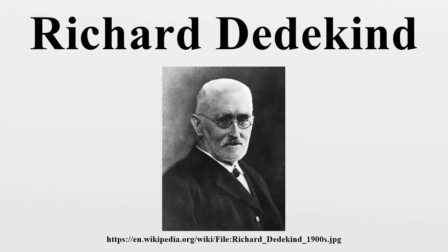Dedekind defined an ideal as a subset of a set of numbers composed of algebraic integers that satisfy polynomial equations with integer coefficients. The concept underwent further development in the hands of Hilbert, especially of Emmy Noether. Ideals generalize Ernst Eduard Kummer's ideal numbers, devised as part of Kummer's 1843 attempt to prove Fermat's last theorem. In an 1882 article, Dedekind and Heinrich Martin Weber applied ideals to Riemann surfaces, giving an algebraic proof of the Riemann-Roch theorem.